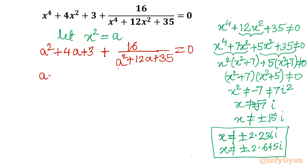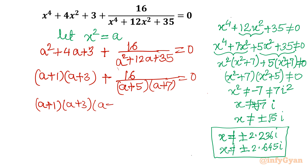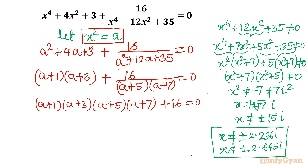Factoring the numerator: a² + 4a + 3 = (a + 1)(a + 3), splitting 4a as 3a + a. The denominator, already calculated, is (a + 5)(a + 7). Taking LCM and multiplying both sides by (a + 5)(a + 7) gives: (a + 1)(a + 3)(a + 5)(a + 7) + 16 = 0, where a = x².